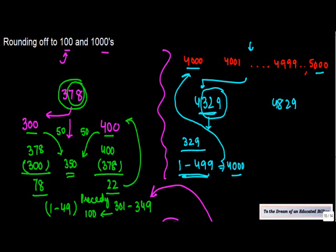Same logic which we discussed here, I am not getting into it again. But, if this last three digits lie between 501 to 999, it is rounded off to the next 1000.